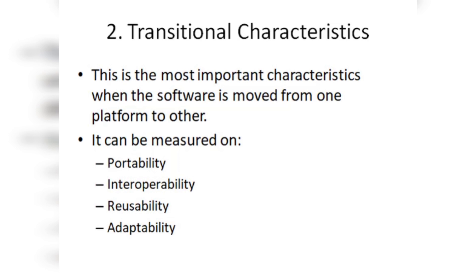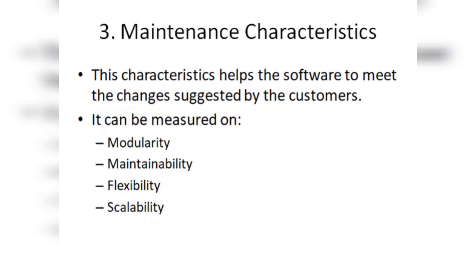Next is interoperability — whether internal operations are managed or performed properly within different operating systems, within different functionalities, and within different resources. If performance does not change across these, then transitional characteristics are satisfied. Next is reusability and adaptability with respect to transitional characteristics.